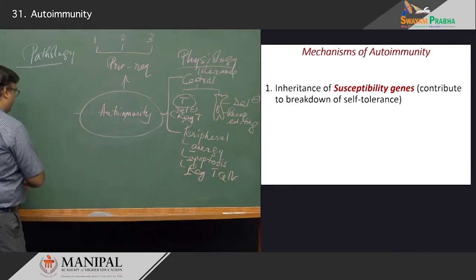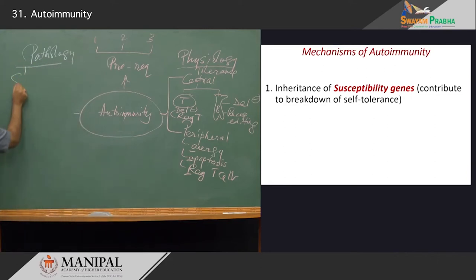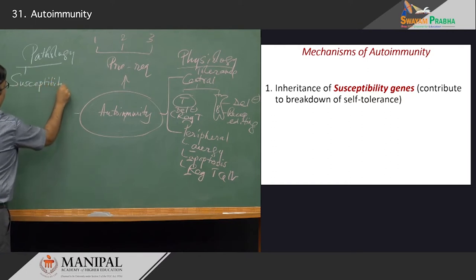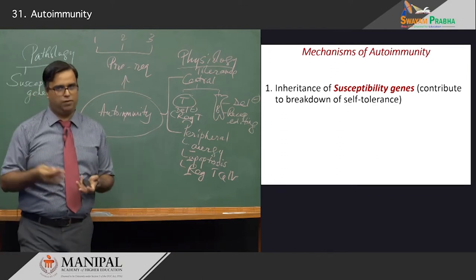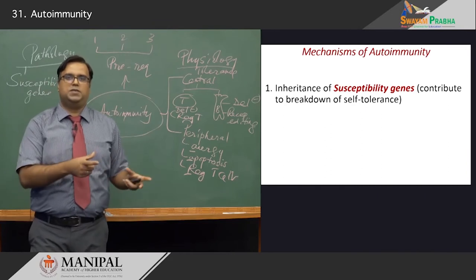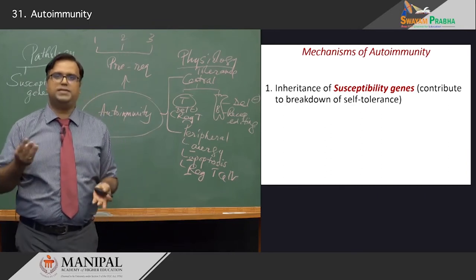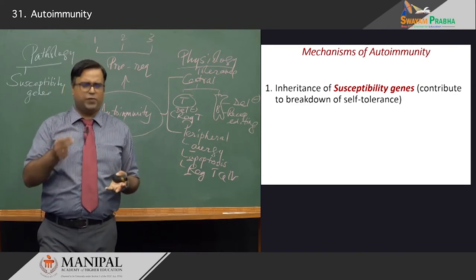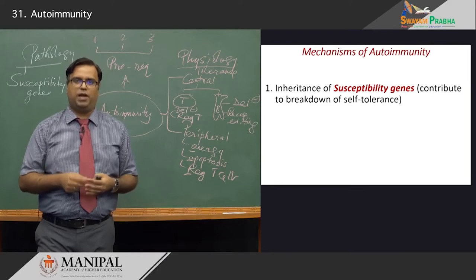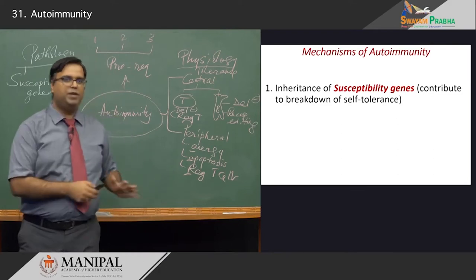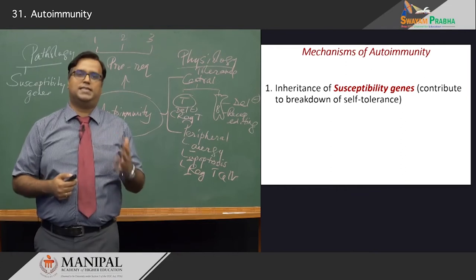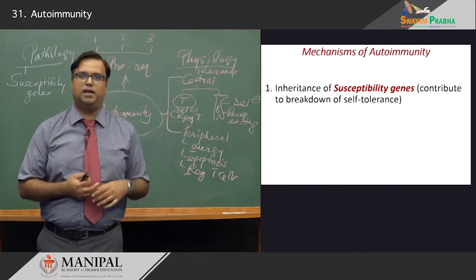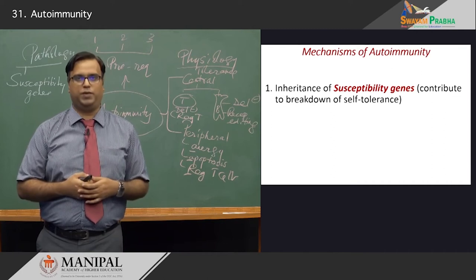One important factor is the inheritance of susceptibility genes. Certain individuals are more prone to develop a disorder than others. Even though all of us are endowed with the same molecular genetics — with mild variations — one population is affected more than others simply because there is a susceptibility due to some change in genes resulting in these people becoming more prone to develop autoimmune disorders.